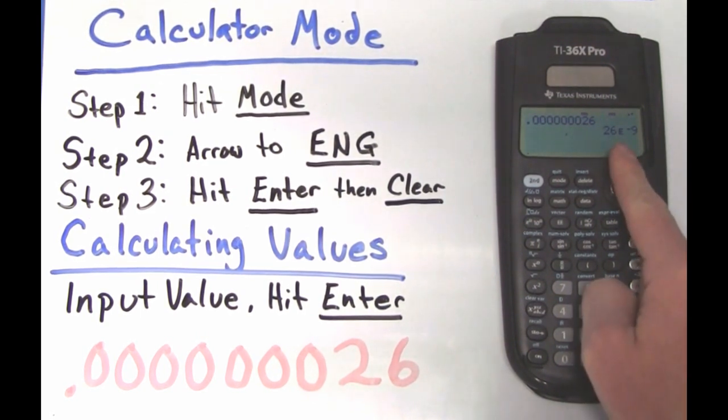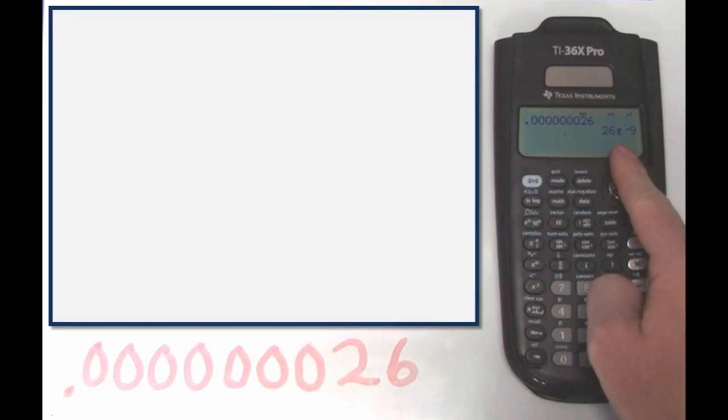The answer that is provided for us doesn't exactly look like it is engineering notation, but it is. Your calculator might be different, but the e in this is in place of times 10. So 26 times 10 to the negative ninth and 26e negative 9 are the same thing.